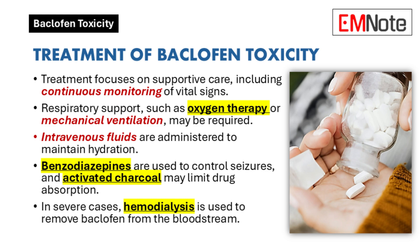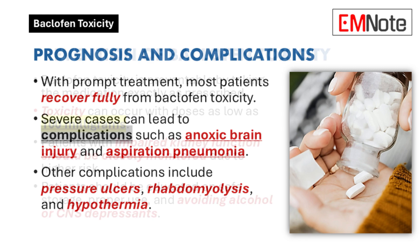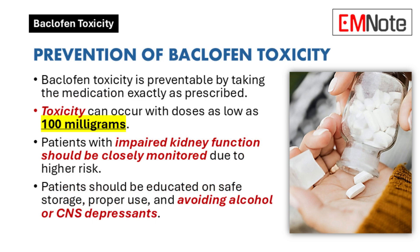Supportive care is key, and a multi-pronged approach is often necessary. Regarding long-term complications, the prognosis depends on the severity of the overdose. With prompt treatment, full recovery is common. However, severe cases can lead to anoxic brain injury from oxygen deprivation, aspiration pneumonia, pressure ulcers from immobility, rhabdomyolysis — a breakdown of muscle tissue — and hypothermia.